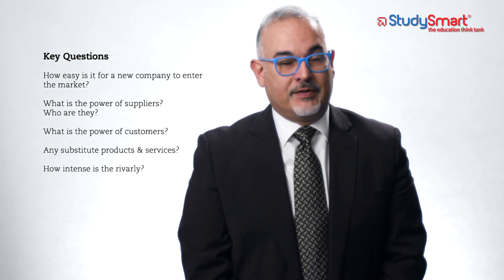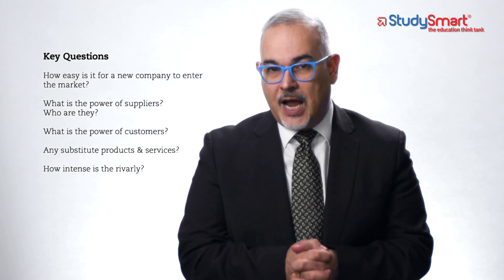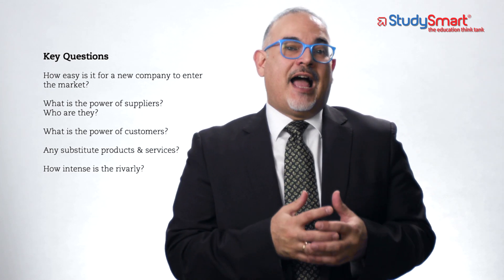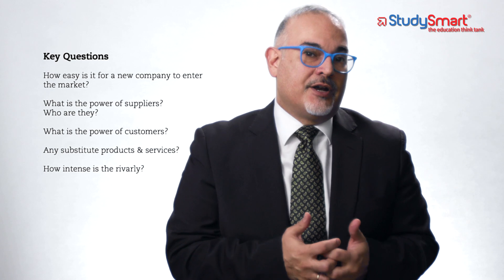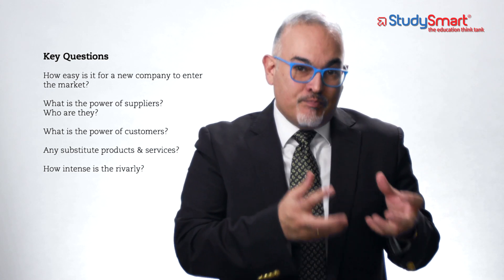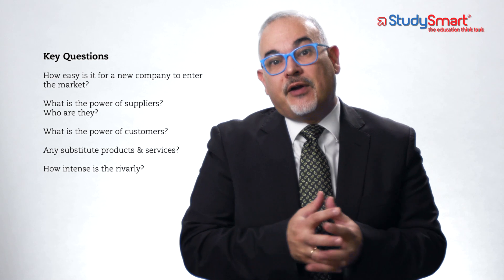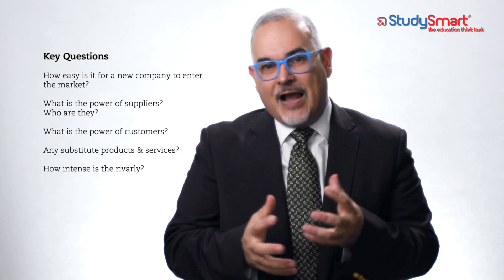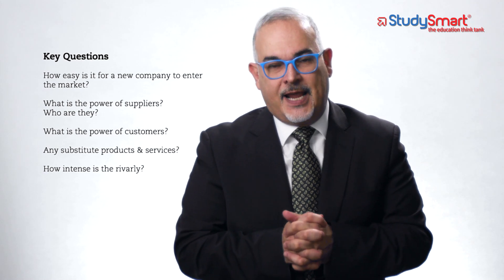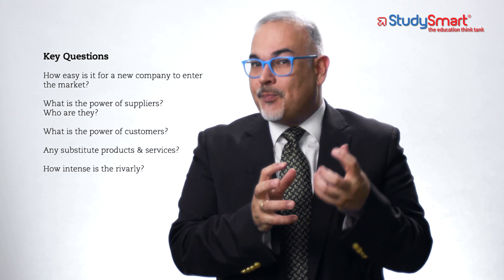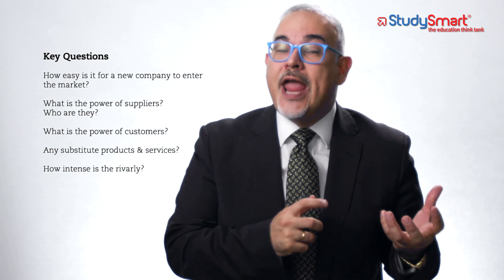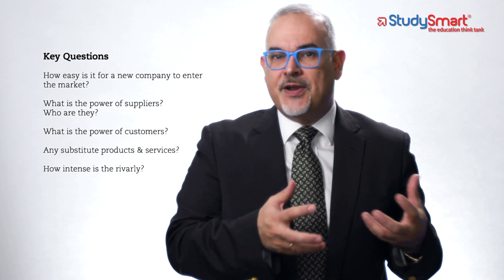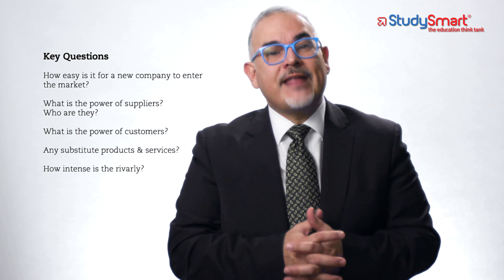The third element is the power of your suppliers, and this depends on the industry. Some industries have very important suppliers needed to manufacture their good or service, whereas in other areas suppliers are not that dominant and don't dictate prices. It's very important to check if your suppliers have power, because in a certain way your supplier may be competing with you — maybe not today, but maybe in the future.